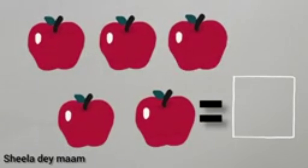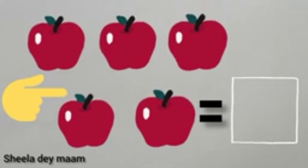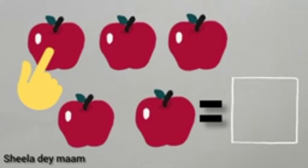Tell me kids, these are... Yes, you are correct. These are apples. Use your fingers and count the apples. First, put your finger on the apples and then start counting.